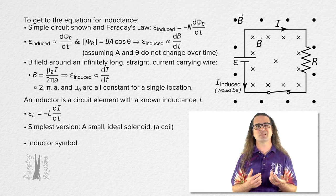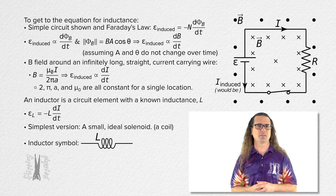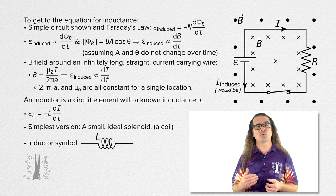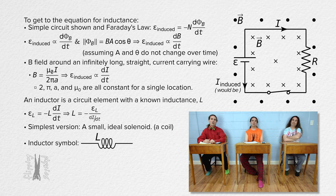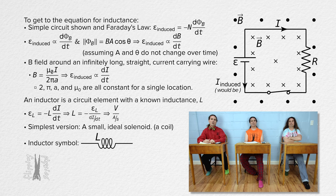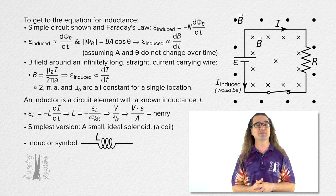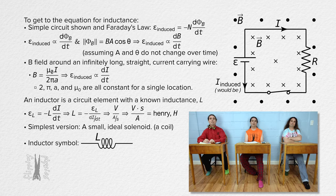Because a solenoid is in the shape of a coil, the symbol for an inductor looks like the coils of a miniature solenoid. The units for inductance: first we rearrange the equation to solve for inductance. Inductance equals the negative of the induced EMF over the derivative of current with respect to time. The units for inductance are volts divided by amps per second, which is volts-seconds per amp. The special name for those units is Henrys, capital H. The symbol for inductance is capital L and the units for inductance are capital H for Henrys.